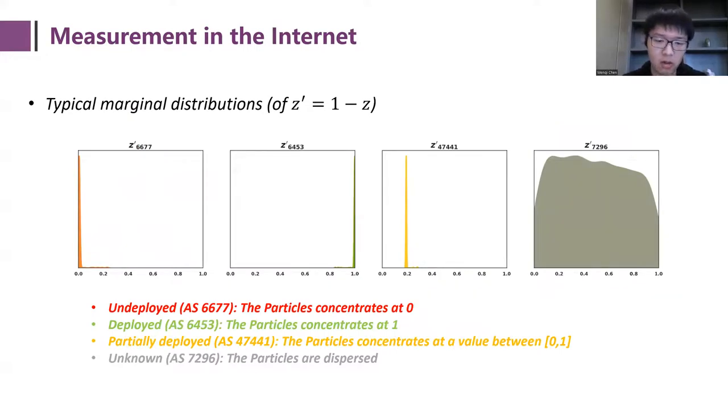Then in the experiment, we perform a large-scale measurement in the internet and compare our model with some baseline methods. Here are some representative marginal distributions. In the first two figures, the particles concentrate at 0 and 1, which show great evidence in not deploying and deploying ROV. In the third figure, the particles concentrate at a value between 0 and 1, which means that this AS shows different filtering behavior on different paths. And in the last figure, the particles are widely dispersed, which means that we lack enough information to infer the ROV deployment of this AS.